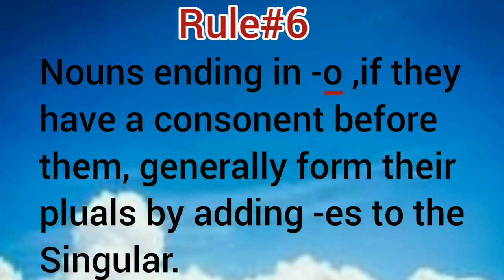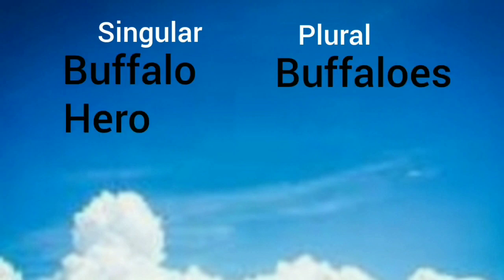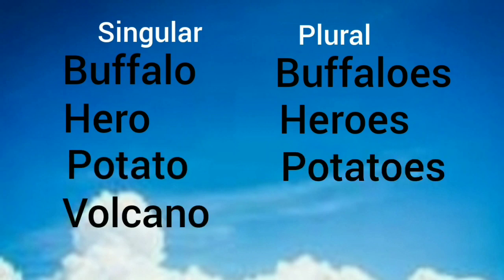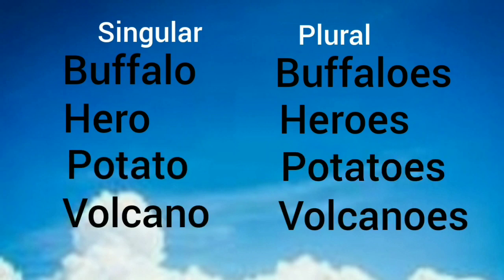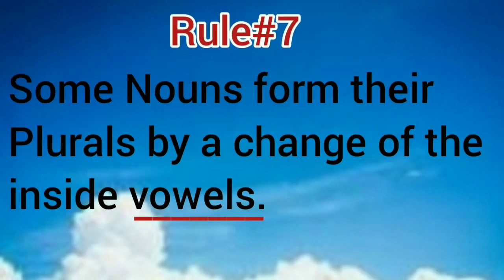Nouns ending in -o, if they have a consonant before them, generally form their plurals by adding -es to the singular. Examples: buffalo-buffaloes, hero-heroes, potato-potatoes, volcano-volcanoes, mosquito-mosquitoes.